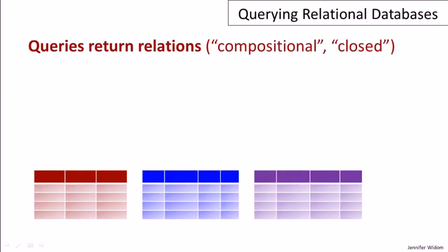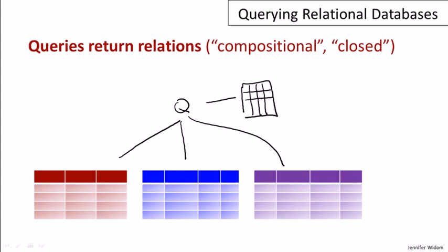In all relational query languages, when you ask a query over a set of relations, you get a relation as a result. Let's run a query Q over these three relations we've shown here, and what we'll get back is another relation. When you get back the same type of object that you query, that's known as closure of a language, and it really is a nice feature.